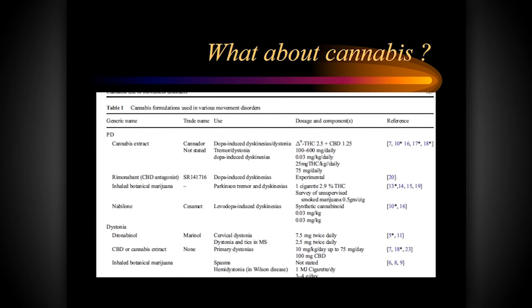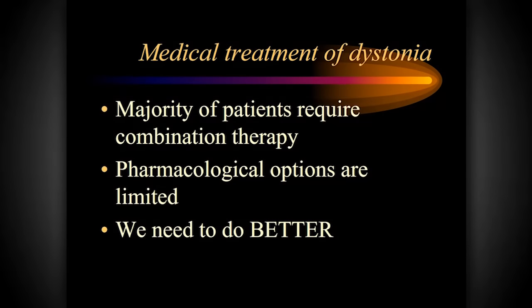On cannabis: we actually do have published literature in dystonia to communicate. Dr. Berger will expand on the meta-analysis of published literature across different movement disorders. In closing: majority of patients require combination therapy. Pharmacological options are limited — a literature search today yielded 240 hits for dystonia on clinical trials with essentially no new pharmacological intervention; the majority involve surgical management. Botulinum toxin and surgical management are both extremely exciting, but we definitely need to do better with medical management — which is a good segue into Dr. Patel's presentation.